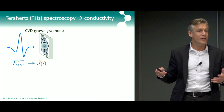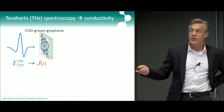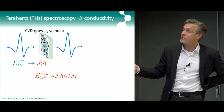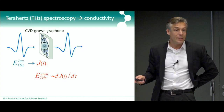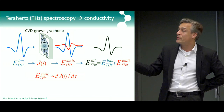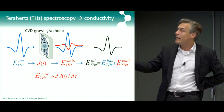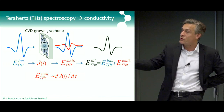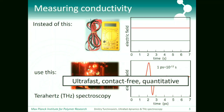How does this work? The incoming terahertz pulse accelerates charges in graphene, generating a current. From electromagnetism, a current emits a field proportional to the time derivative of the current. This current is out of phase with the driving field, giving rise to interference and a reduction in the terahertz pulse amplitude. By taking the difference between the two pulses, we have something proportional to the time derivative of the current, from which we can back-calculate the conductivity.